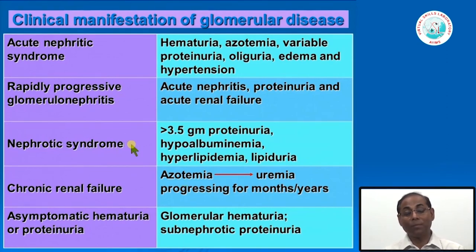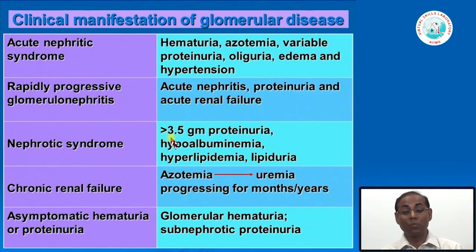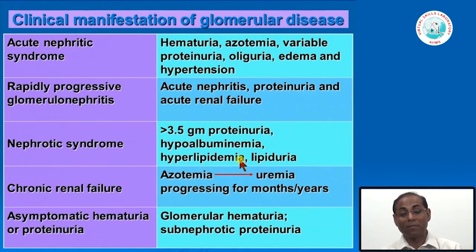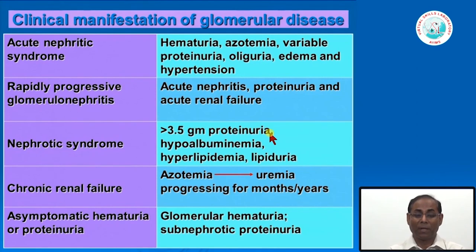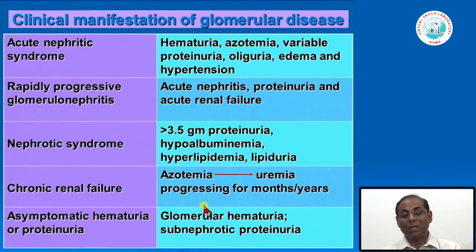Nephrotic syndrome is the presentation for a large number of patients. There is heavy proteinuria—more than 3.5 grams—and hypoalbuminemia, so serum albumin must be measured. There is usually hyperlipidemia manifested by elevated cholesterol levels, and it may or may not be associated with lipiduria. This massive proteinuria is the major problem. Chronic renal failure has a long history with gradually increasing serum creatinine and blood urea, which can result from any chronic renal disease.